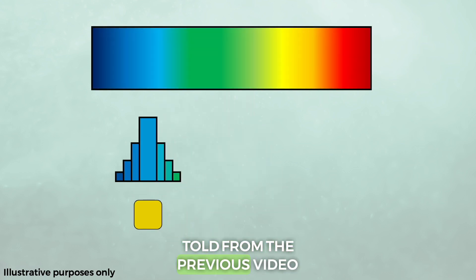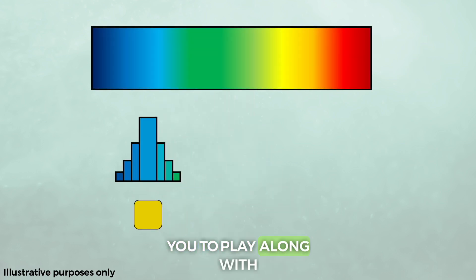Probably the biggest lie I told from the previous video was one that I actually asked you to play along with. We had to pretend that white diodes didn't exist. That's because white LEDs have some extra components that need a little bit of explanation, and it wasn't really helpful for the last video to go into that detail. But now that we're delving further in, we can actually explore white LEDs a bit more.